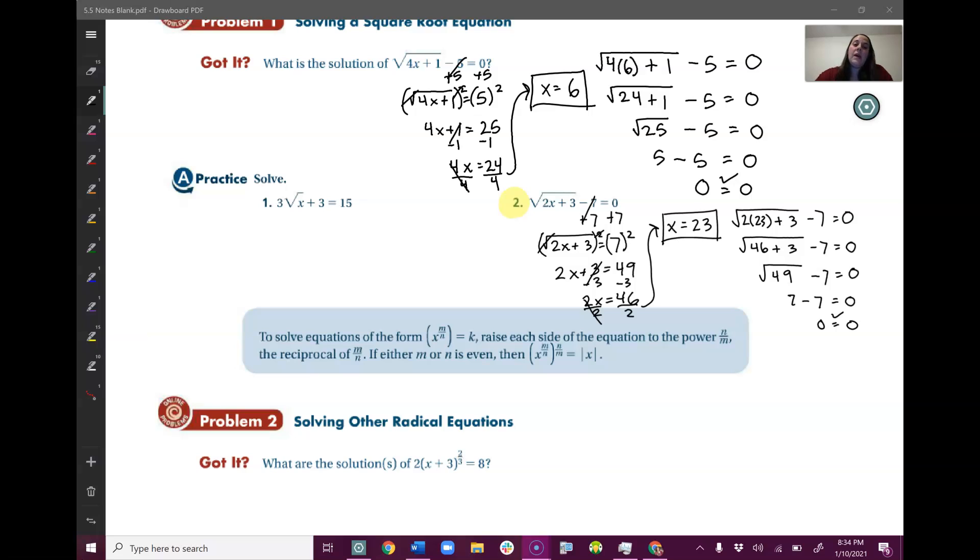To get 23. And then don't forget, I needed to plug it back in to check it. So I plugged 23 back into this original equation, and I simplified it out, ended up with 7 minus 7, which is 0. So that isn't a fake answer. It does work.